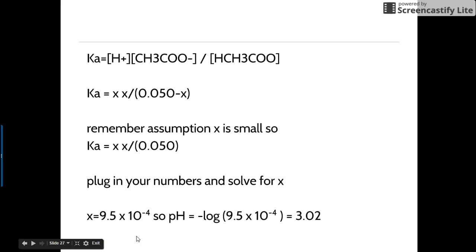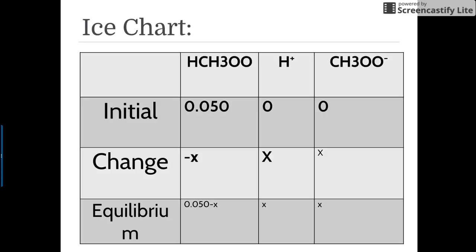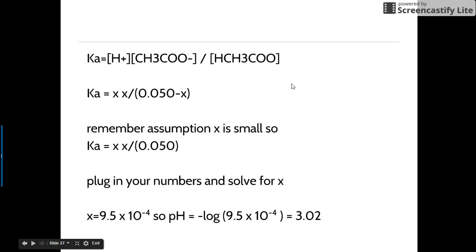X is 9.5 times 10 to the negative 4, so the pH is the negative log of 9.5 times 10 to the negative 4, because, remember, X is the H-plus concentration. See? The X is the H-plus concentration. Here's X. Here's H-plus. Remember, H-plus and H3O-plus are the same. You end up with a pH of 3.02.